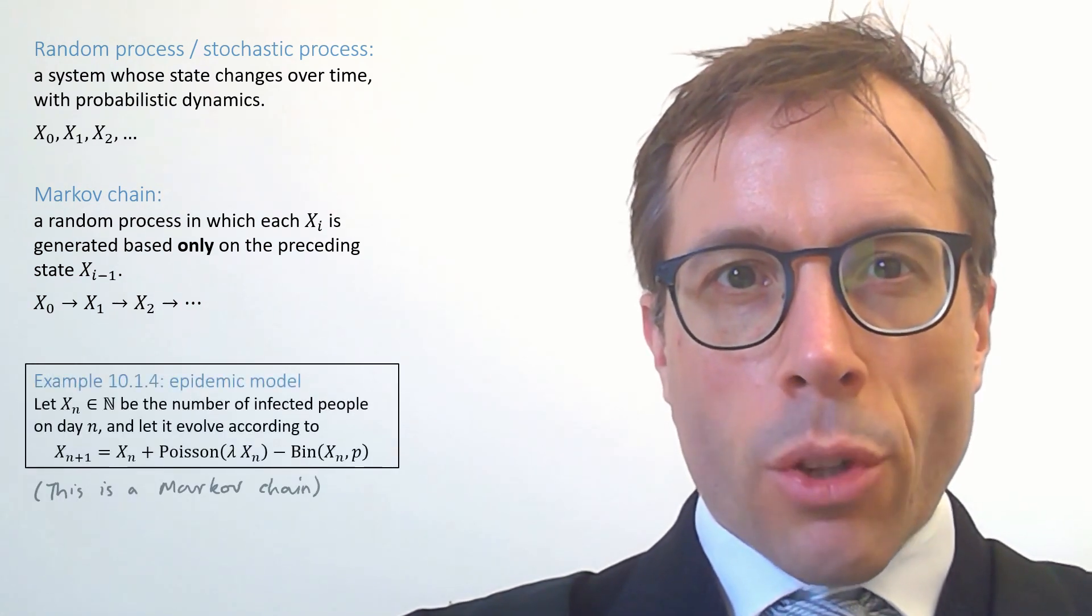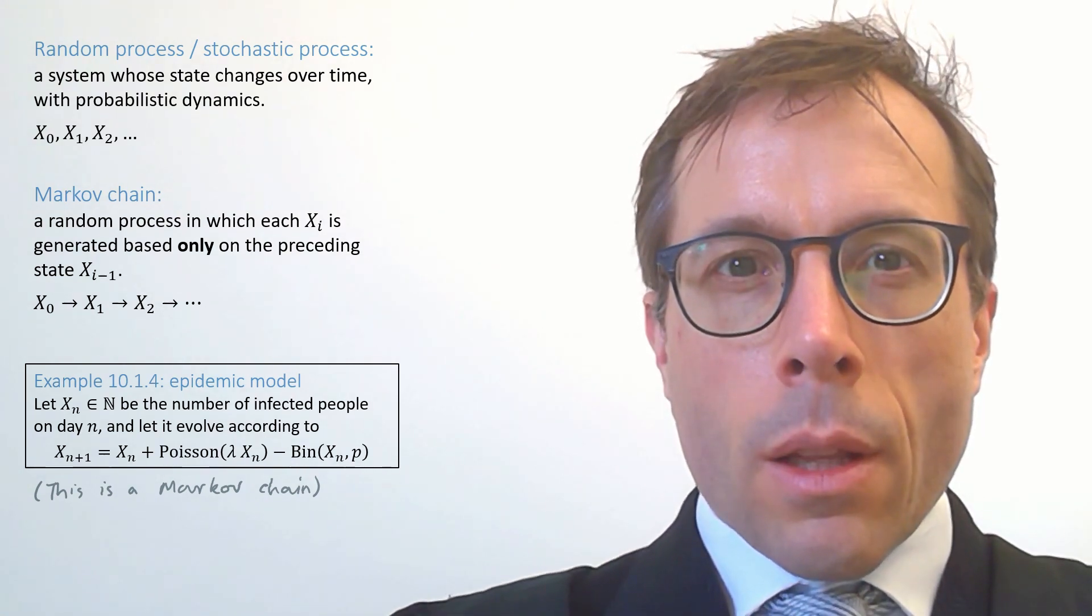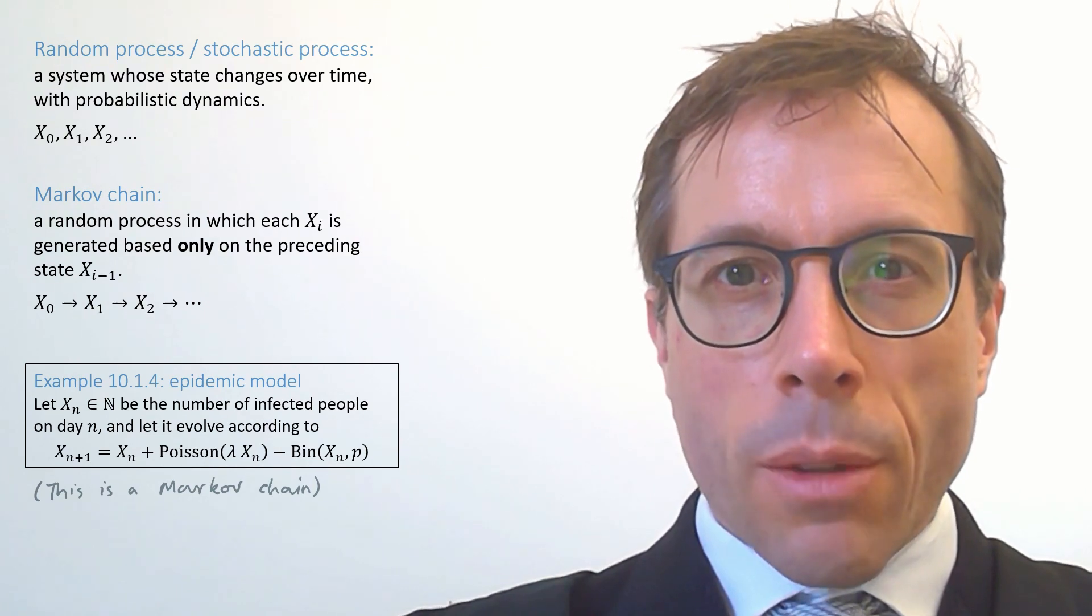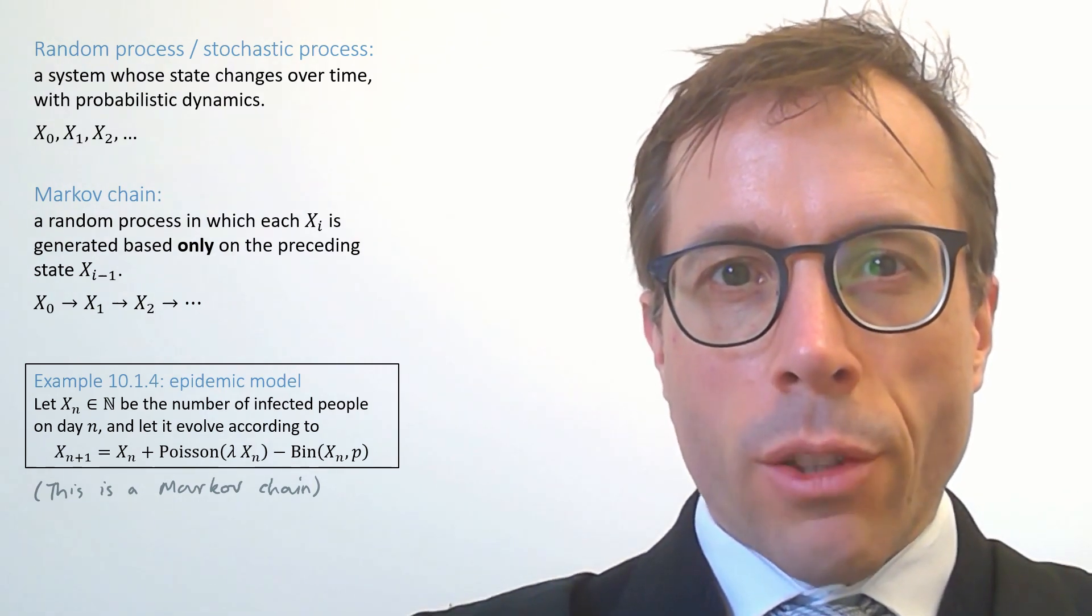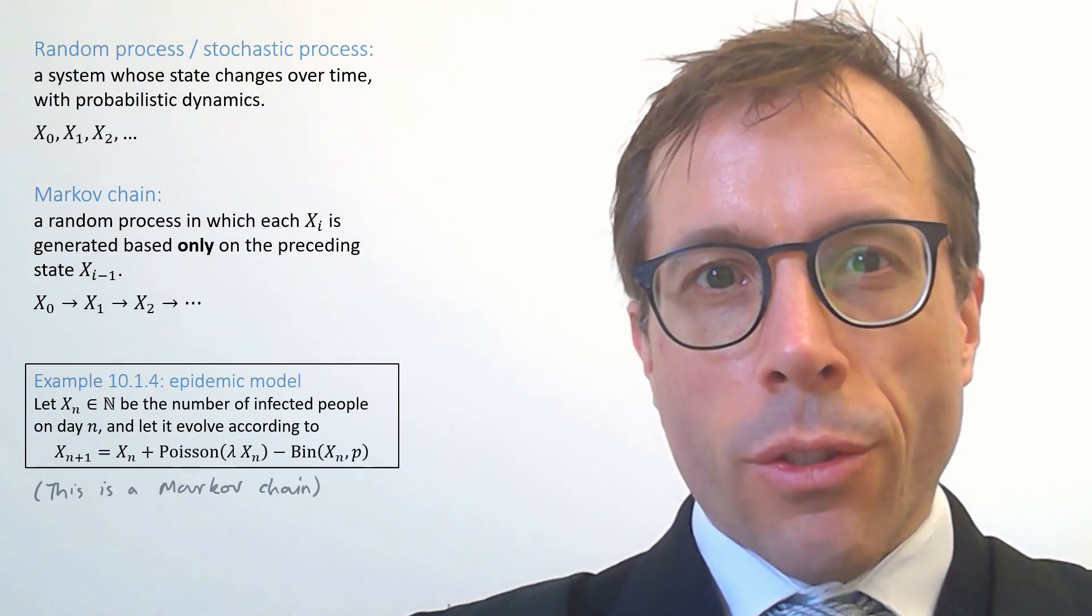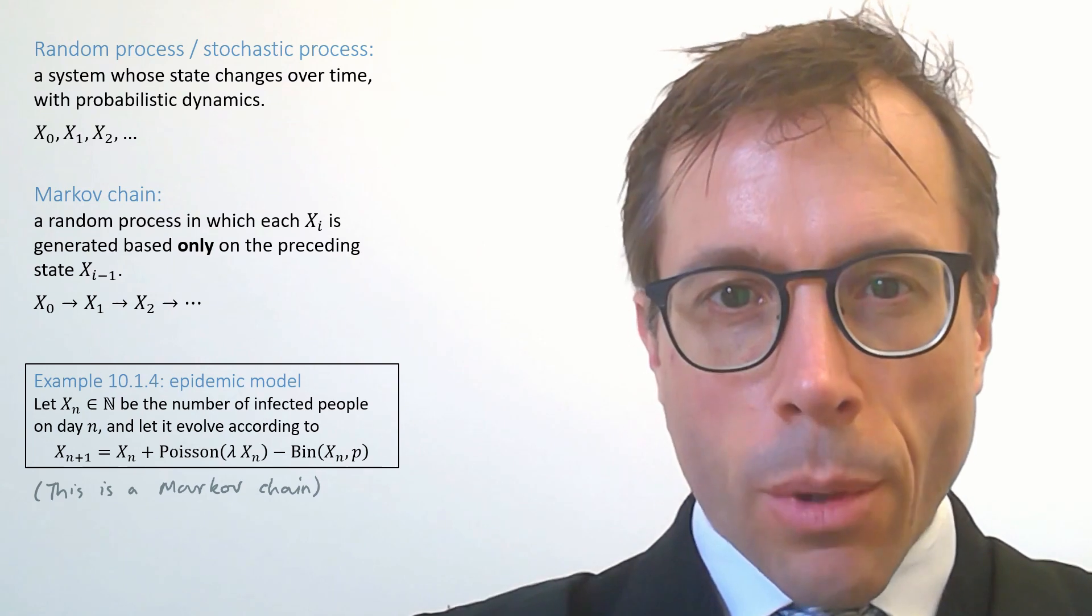The epidemic model we looked at a moment ago is a Markov chain. The lovely thing about Markov chains is that they're simple enough to reason about, but they're also rich enough to capture a range of interesting behaviours. We saw that with the epidemic. We saw that the same equations can sometimes behave like random variables and sometimes behave like deterministic processes.